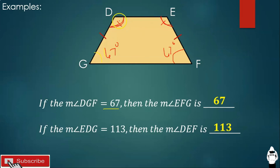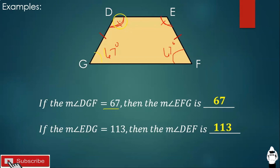A student asks: how about angle D and angle G? We focus on the legs. Angle D and angle G are supplementary, so the sum of these two angles is 180 degrees. Same with angle E and angle F — when the legs of the isosceles trapezoid are involved, the sum of those two angles is 180 degrees.